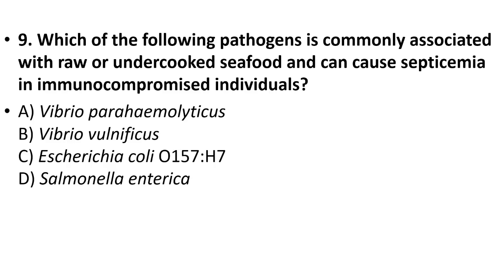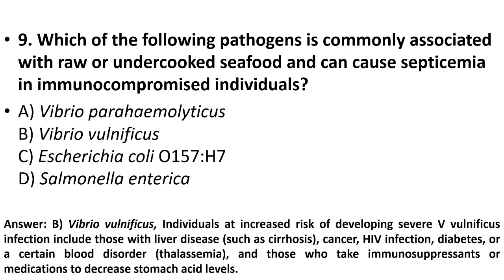Ninth question: Which pathogen is commonly associated with raw or undercooked seafood and can cause septicemia in immunocompromised individuals? Options: Vibrio parahaemolyticus, Vibrio vulnificus, E. coli O157:H7, Salmonella enterica. The answer is option B, Vibrio vulnificus.